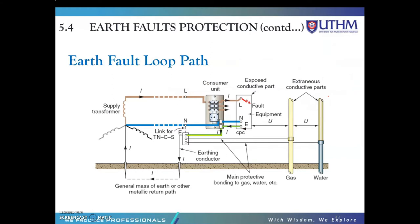This is the diagram of the earth fault loop path. The figure shows the earth fault loop path starting at the point of the fault. The path comprises: first, it flows to the CPC — the circuit protective conductor — then to the consumer's earthing terminal and earthing conductor. The current return path goes either through the metallic path or earth itself, then to the earth-neutral of the supply transformer, and finally through the line conductor from the transformer to the fault. This is the earth fault loop path.